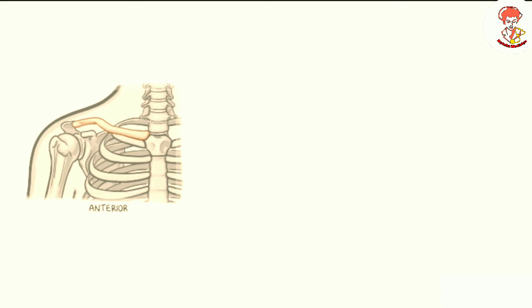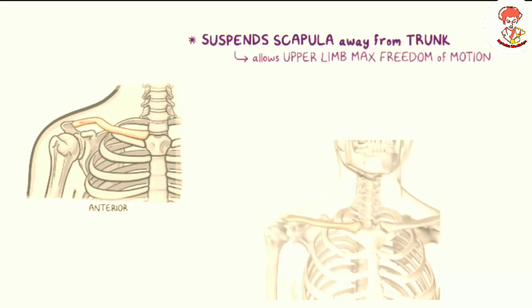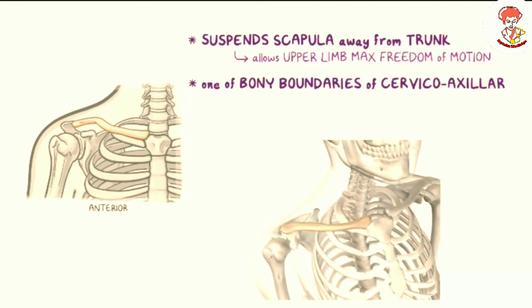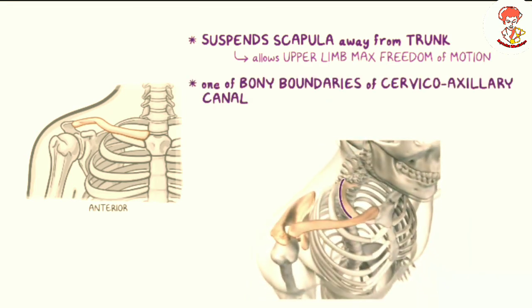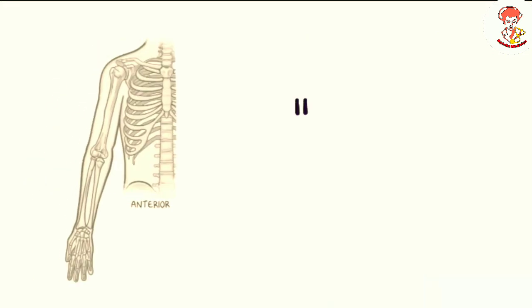The clavicle's most important job is to suspend the scapula away from the trunk, allowing the upper limb maximum freedom of motion. The clavicle is also one of the bony boundaries of the cervicoaxillary canal, which is a passageway that extends between the upper limb and the neck. So the clavicle also protects the neurovascular bundles supplying the upper limb.